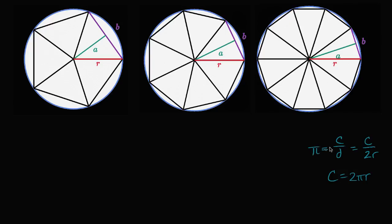Pi is defined as the ratio between the circumference and the diameter. So you multiply both sides by the diameter, and you get circumference equals pi times the diameter, or equivalently, circumference equals two pi r. From this, I'd like to get an intuitive feel for why the area formula is given by π r squared.